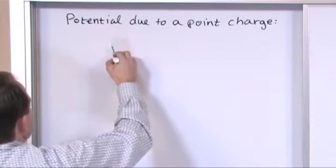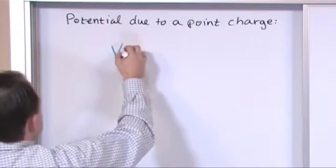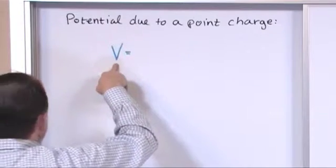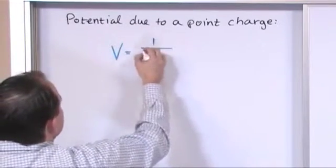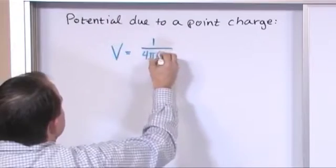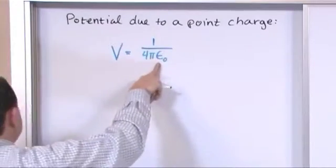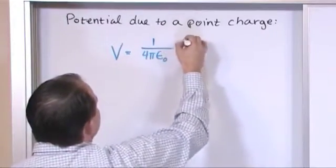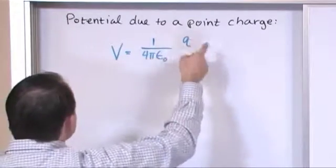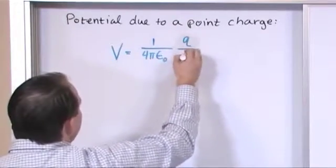So the potential due to a point charge is going to look very familiar, very similar to some other things you've seen. The potential is equal to 1 over 4π times ε₀, which is the permittivity of free space, times whatever charge it is you're looking at in Coulombs, could be positive, could be negative, divided by r.